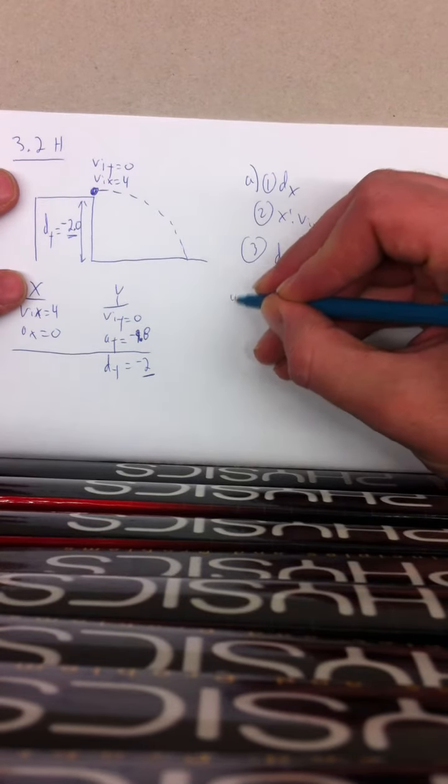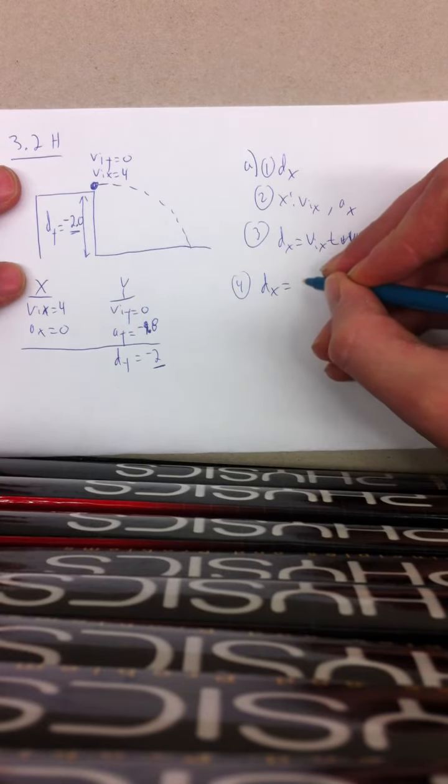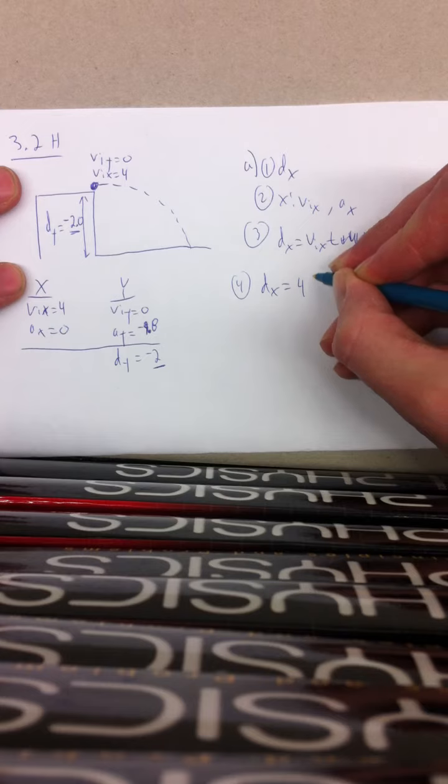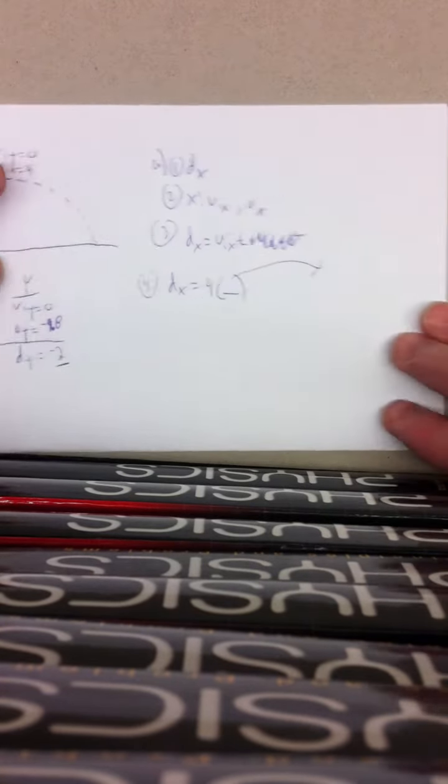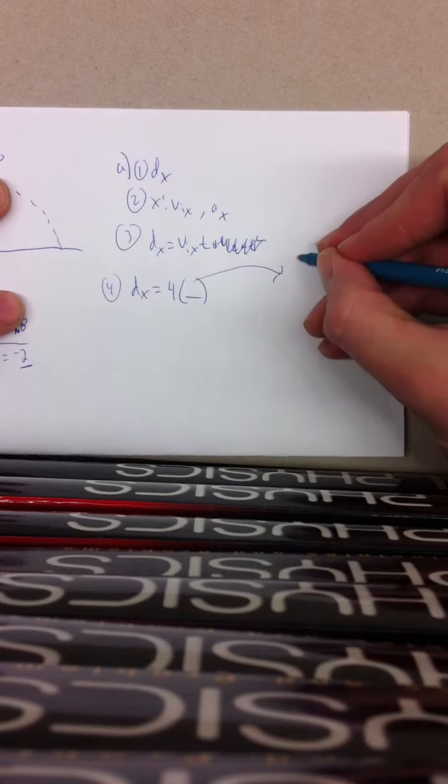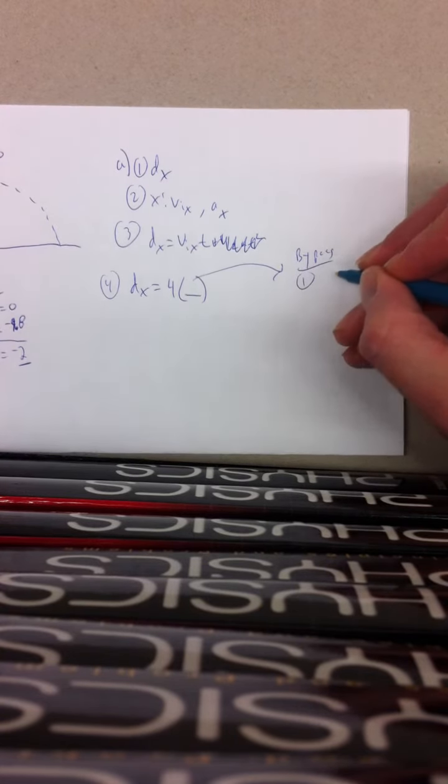So we have step 4, dx is equal to 4 times blank. Now, this is going to be a bypass to solve for time. We can use the vertical column for the solve for time.